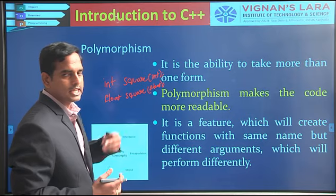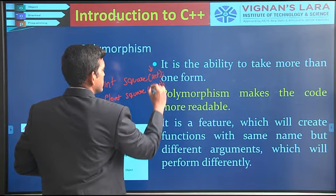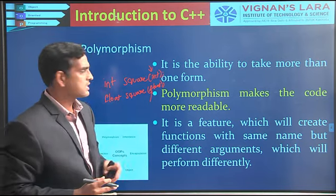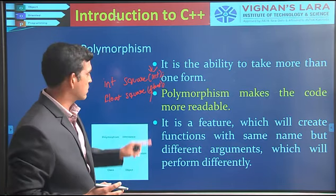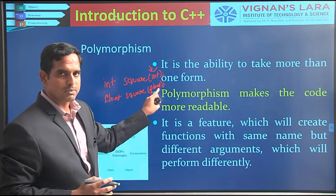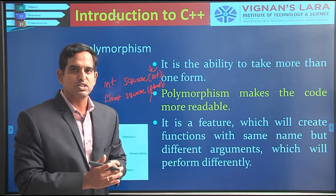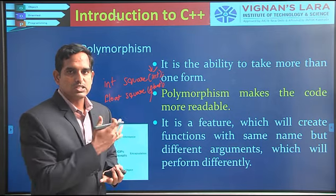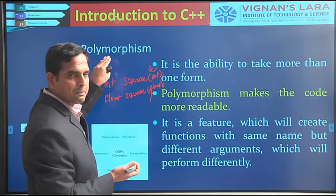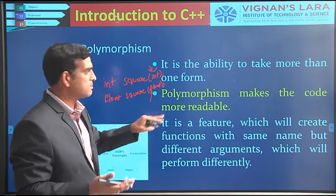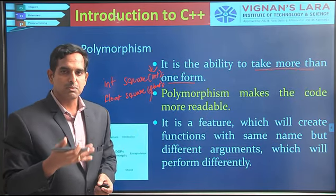Function overloading mainly helps to implement polymorphism — a particular thing taking more than one form. Where the arguments are different, the function name is the same but the arguments differ. In one case we have int as the argument; in the second we have float. Function overloading is about having the same name but with different arguments, and this implements your polymorphism.